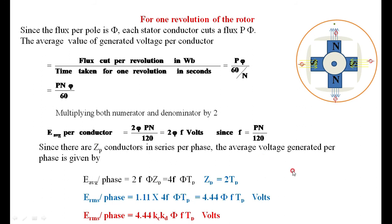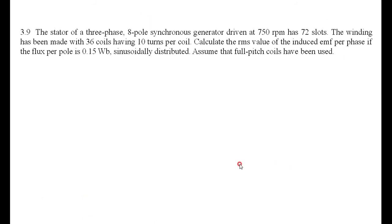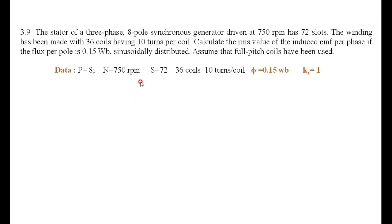For the first numerical: the stator of a three-phase winding has 8 poles, runs at 750 RPM, has 72 slots, 36 coils with 10 turns per coil. Calculate the induced EMF per phase if the flux per pole is 0.1 Wb, sinusoidally distributed, and it is a full-pitch winding. Since it is full-pitch winding, Kc equals 1.